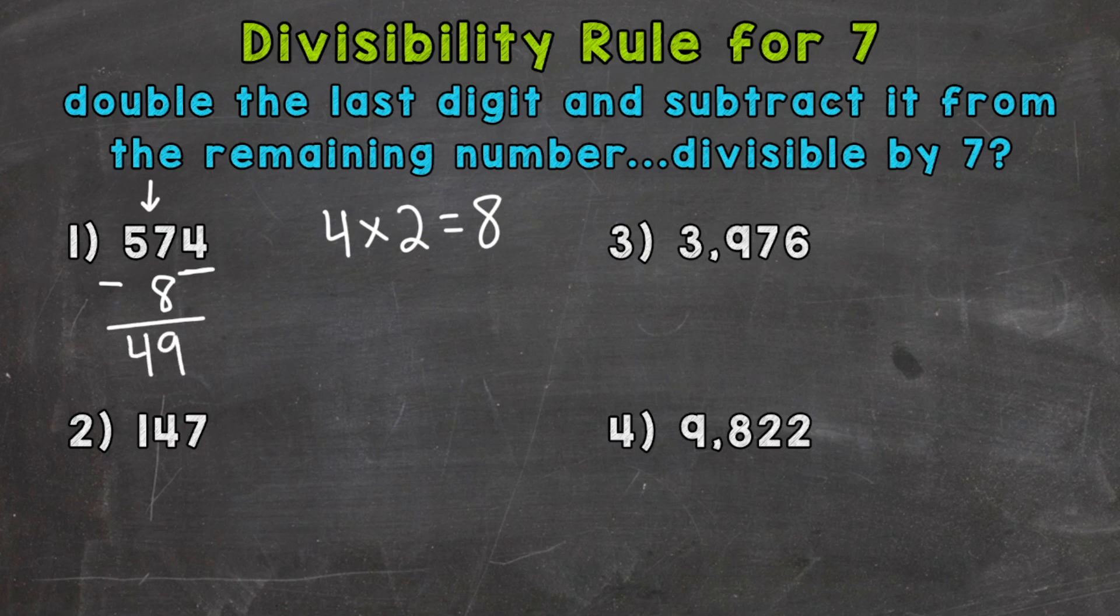So we take a look at that remaining number there, 49, and see if it is divisible by 7. If so, the original number is divisible by 7. So can we do 49 divided by 7 and get an answer without a remainder? Yes, 49 divided by 7 is 7. So 49 is divisible by 7.